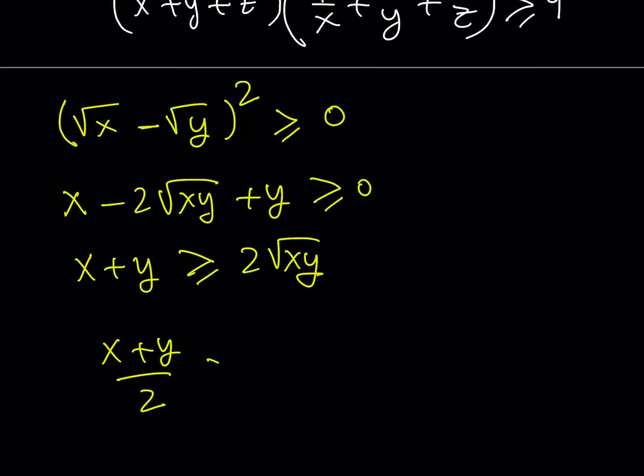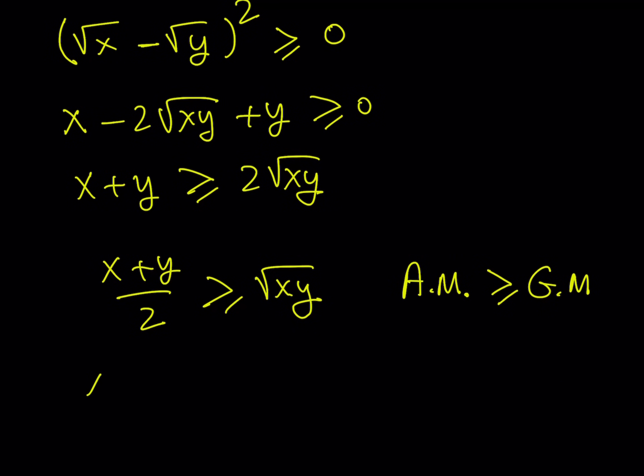Now if you manipulate this a little bit, like divide both sides by 2, you get what's known as AM-GM inequality. So we do know that if we have a bunch of non-negative real numbers, their arithmetic mean is always going to be greater than or equal to their geometric mean. With three numbers, this looks like x plus y plus z divided by 3 is greater or equal to the cube root of xyz.